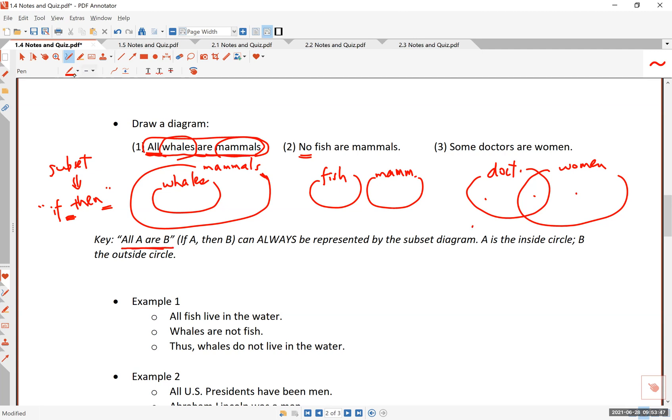All right, so here's a key, and this is something that I should stress, and you should pay close attention to. All A are B is equivalent to saying if A, then B can always be represented by the subset diagram. A is the inner circle, and B is the outer circle. All whales are mammals. If X is a whale, then X is a mammal. If something is in the inside circle, then it must be in the outside circle.